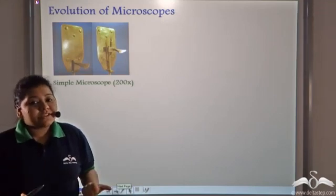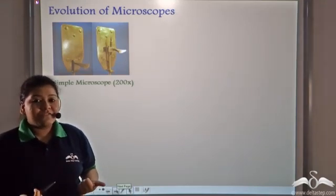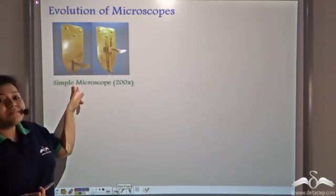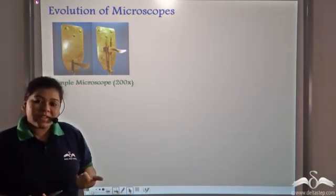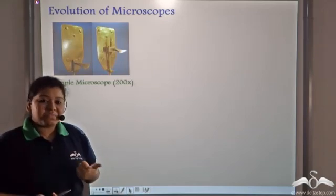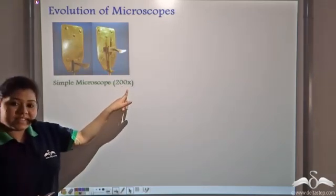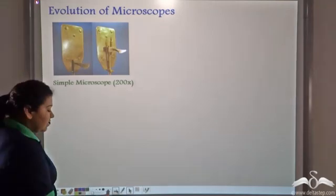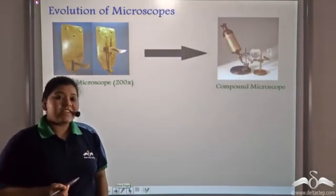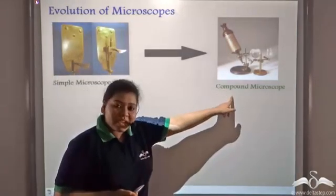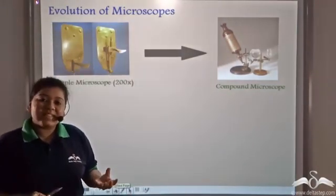So, how were the microscopes evolved? First, the simple microscope was invented by Anton van Leeuwenhoek and it had a magnification power of 200x. Next, the English physicist Robert Hooke invented the compound microscope that had two biconvex lenses.